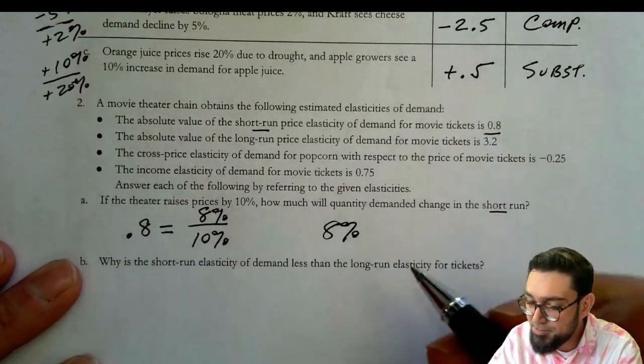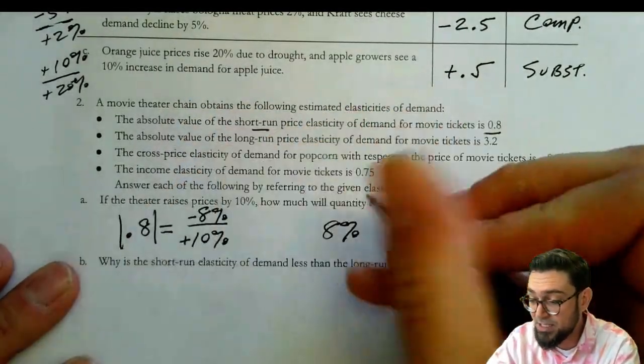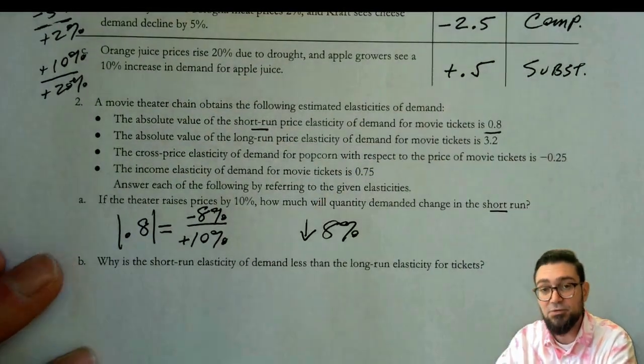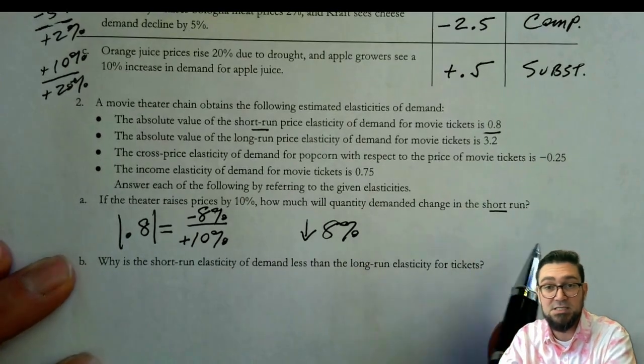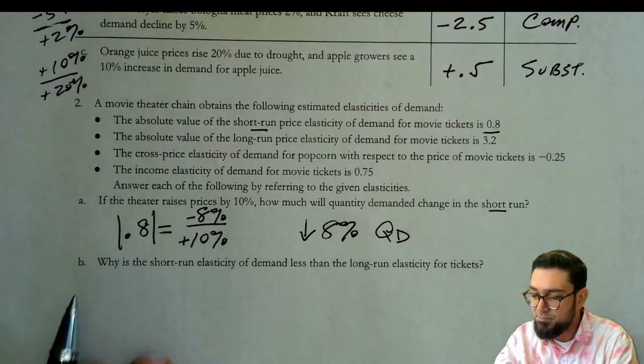But what I really probably would do is know that these are given as absolute values, and this is going to be a decrease. That's because this is about price elasticity of demand. And so if the price is going up, I know quantity demanded is going down.